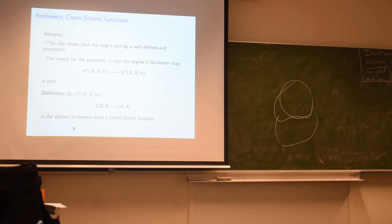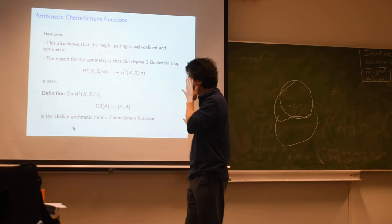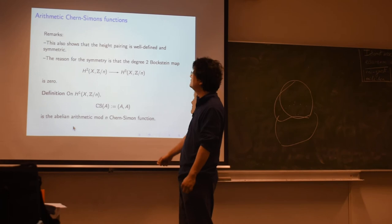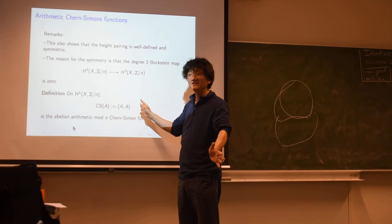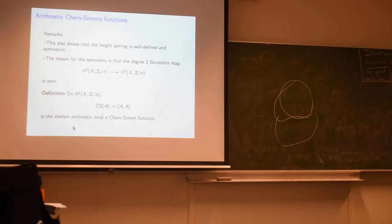So finally, this is the first case of the arithmetic Chern-Simons function. On H1, you just take this quadratic form—A bracket A—in the previous sense, so this is A paired with D of A, exactly as in differential geometry. That's the first mod-n abelian arithmetic Chern-Simons function. It's a very elementary object to study, but it still seems to have some interesting properties.